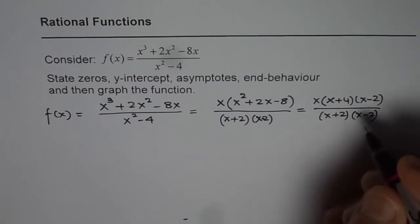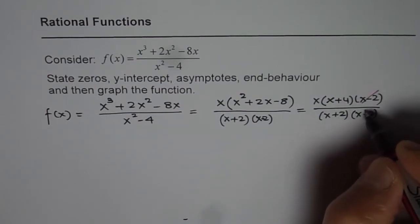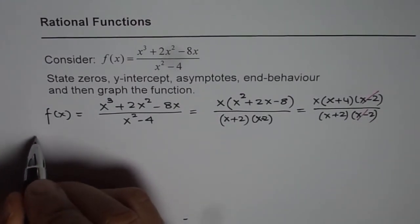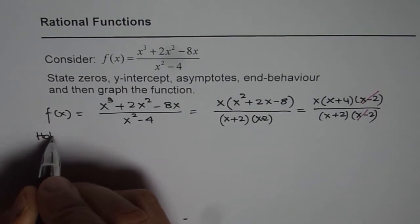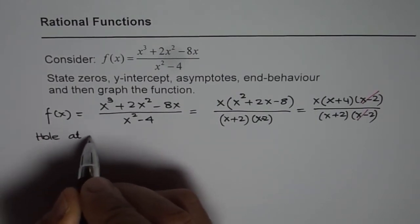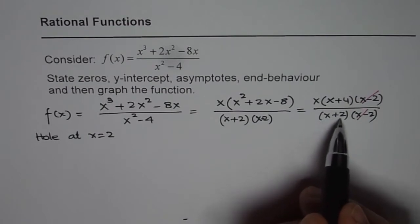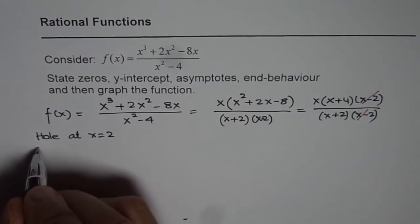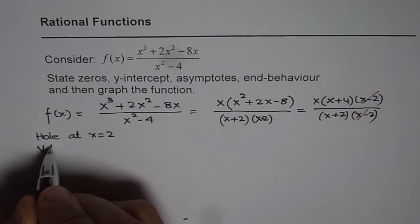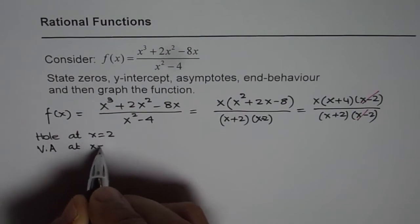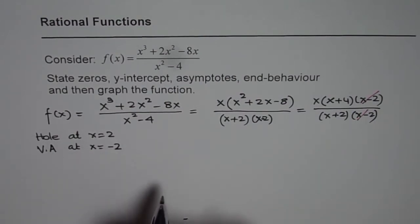As you can clearly see, we have a common factor in numerator and denominator, which is (x − 2). That means we have a hole at x = 2. And (x + 2) will give rise to a vertical asymptote — so we have a vertical asymptote at x = −2.